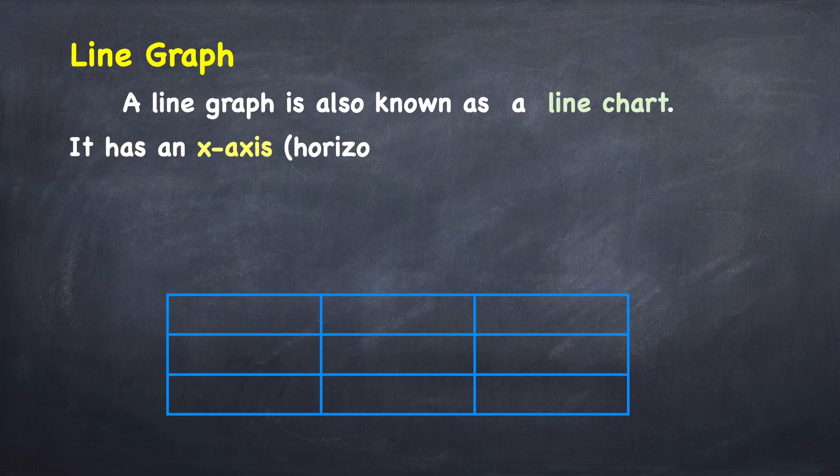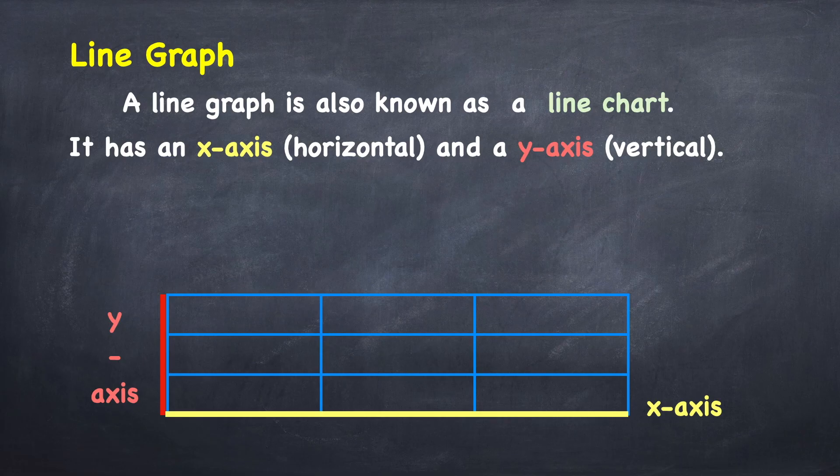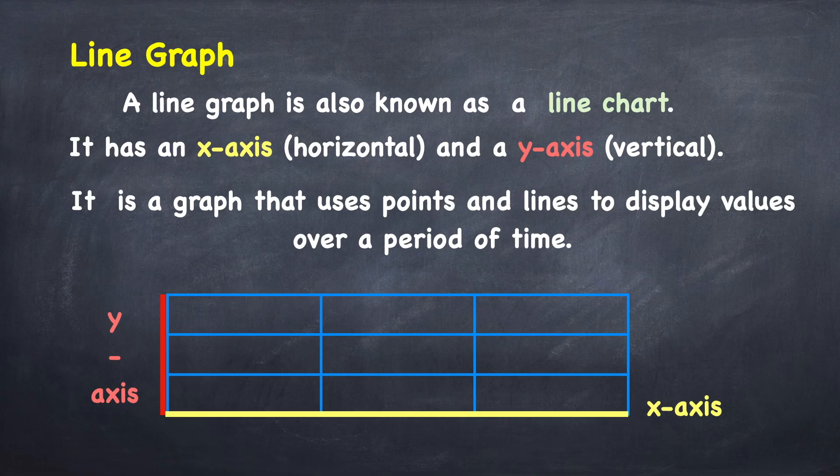It has x-axis, horizontal, and y-axis, vertical. X-axis. Y-axis. It is a graph that uses points and lines to display values over a period of time.